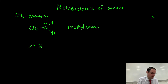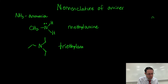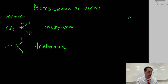Let's get an example here of triethylamine. So this has three ethyl groups. They're all attached to the nitrogen, so we say triethylamine. We assume all of the alkyl groups are just attached to the nitrogen.